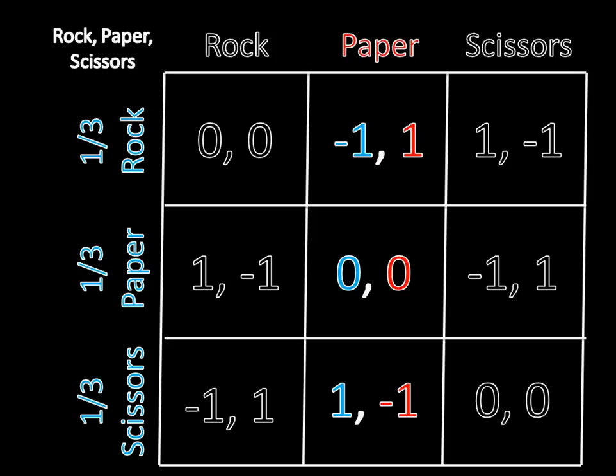Let's check paper. If player two plays paper, she wins a third of the time against rock, she ties a third of the time against paper, and she loses a third of the time to scissors. Again, adding zero plus one third plus negative one third yields zero, so we're looking good here.